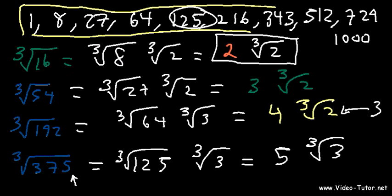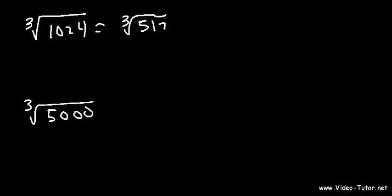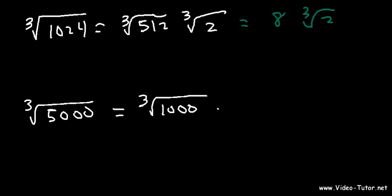Note: the cube root of 192 answer was 4 cube root of 3, not 4 cube root of 2. Now try: the cube root of 1024 and the cube root of 5000. For 1024: the largest perfect cube is 512, since 512 times 2 is 1024. The cube root of 512 is 8, so this is 8 cube root of 2. For 5000: 5000 is 1000 times 5, and the cube root of 1000 is 10, so we get 10 cube root of 5.